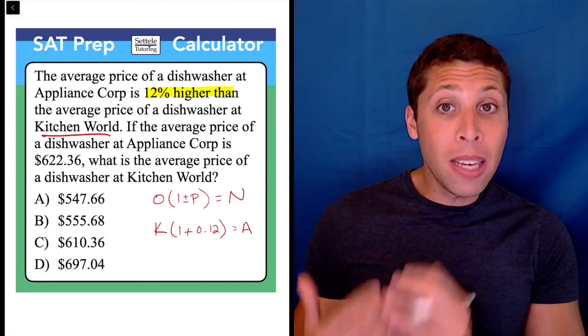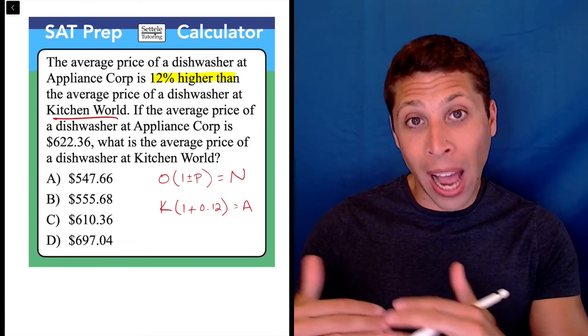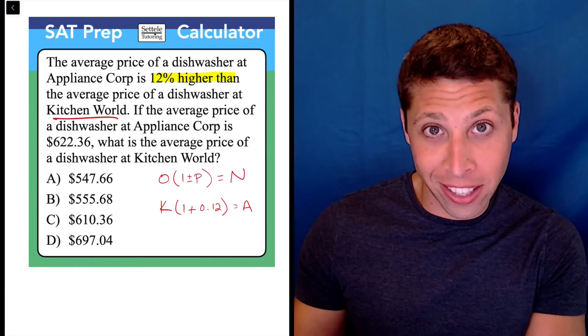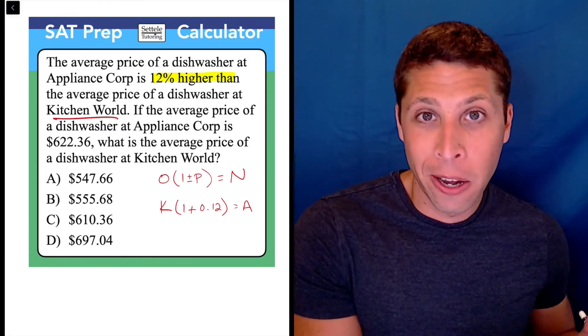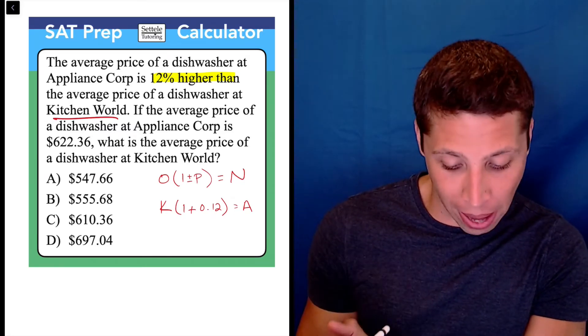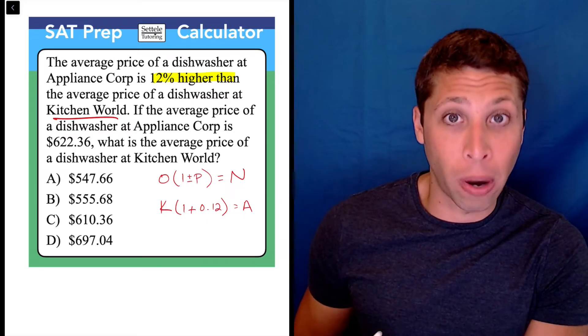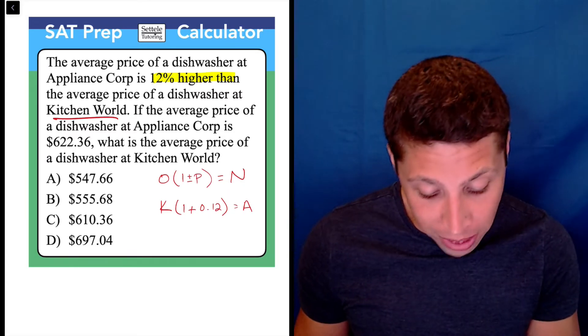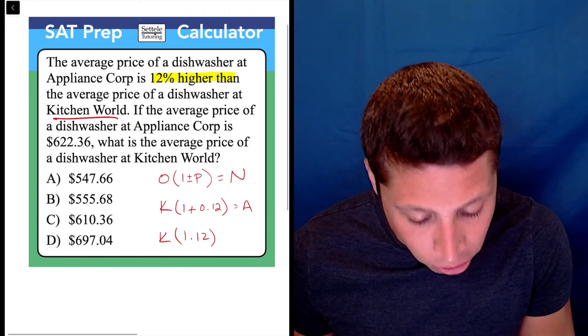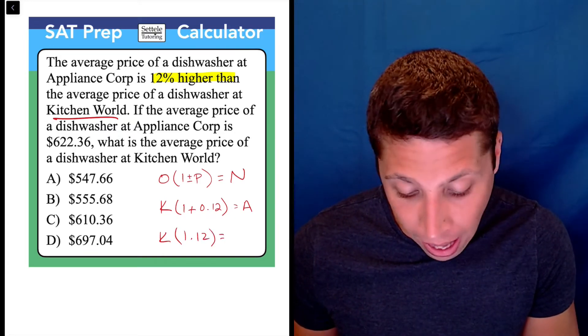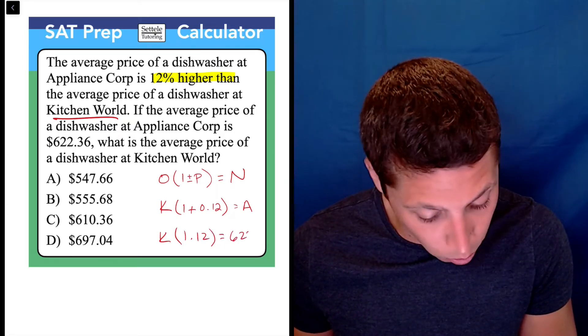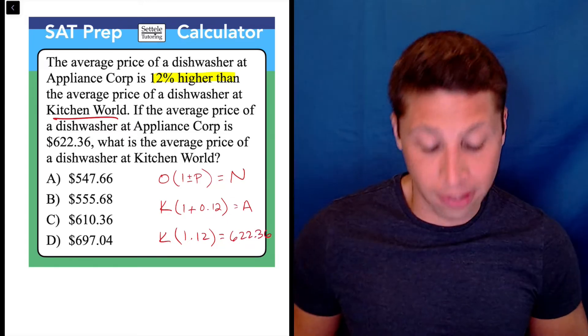So what this means then is we are going to actually take a percentage in this case by doing division, which is the opposite of what we would expect. Because we don't know Kitchen World's price, we know Appliance Corp, so when that goes in, we're going to have 1.12 times K is equal to 622.36.